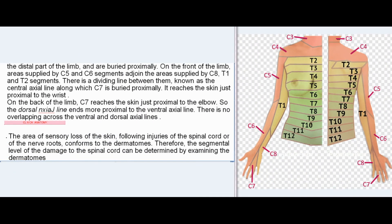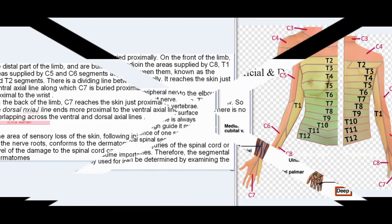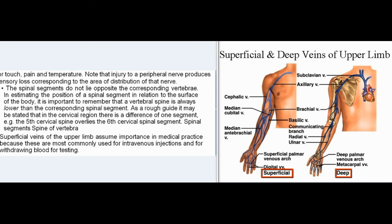As the limb elongates and rotates laterally, the central dermatome C7 is represented only distally and buried proximally. On the front of the limb, areas supplied by C5 and C6 adjoin areas supplied by C8, T1, and T2, with a dividing line called the ventral axial line where C7 is buried. The dorsal axial line ends more proximally than the ventral axial line, and there is no overlapping across these axial lines. Following spinal cord or nerve root injury, the segmental level of damage can be determined by examining dermatomes for touch, pain, and temperature. Injury to a peripheral nerve produces sensory loss corresponding to that nerve's area of distribution.